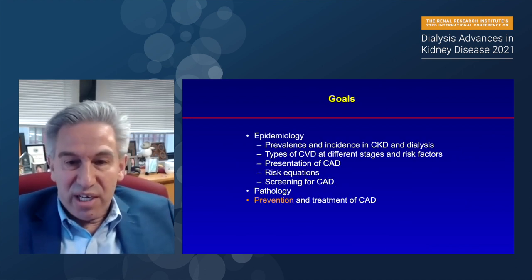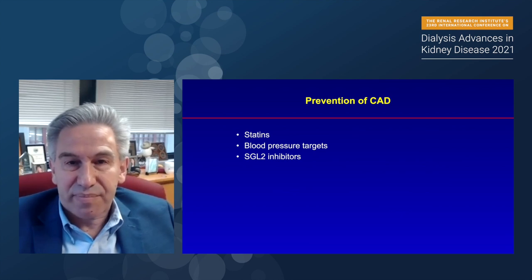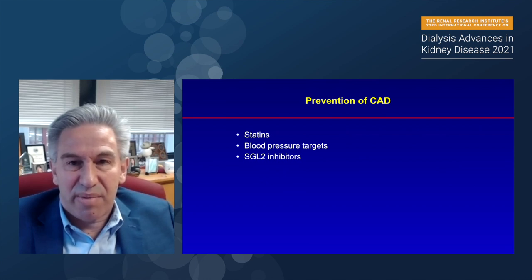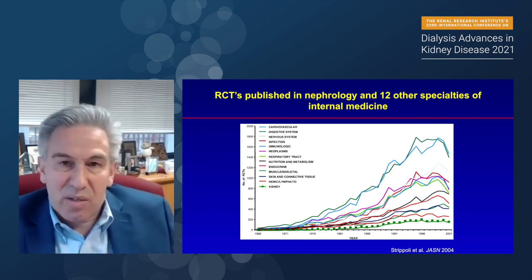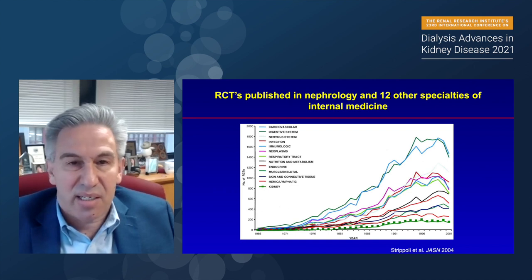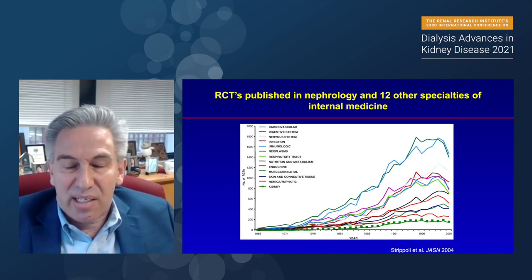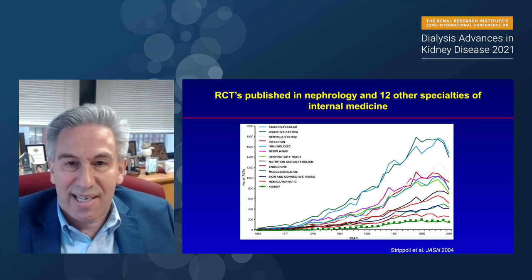Moving into prevention and treatment of coronary disease. I'll focus on statins, blood pressure targets, and SGLT2 inhibitors. First to emphasize: this is an old slide from 2004, reproduced in JAMA Internal Medicine in 2016, showing that kidney disease trials are unfortunately one of the lowest among specialties of internal medicine. We don't have the randomized trials to help with management. We're clearly getting better and I'm excited about progress, but we're still too low in randomized trials, which limits our evidence base.